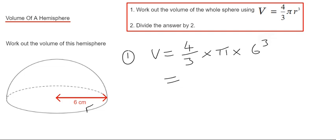So it's probably best that you've got a scientific calculator here. So if we just type that in, I'm just going to leave the answer in terms of pi. So it's two hundred and eighty eight pi. That's the volume of a whole sphere.